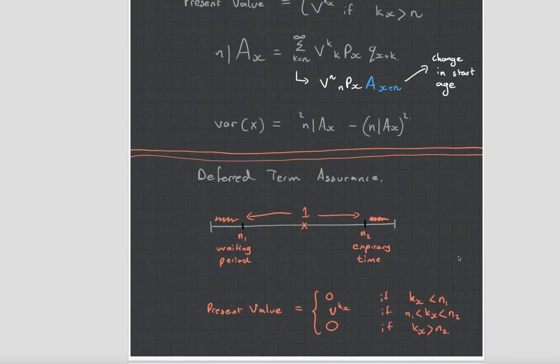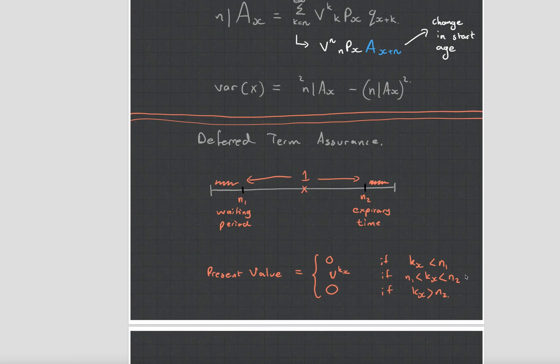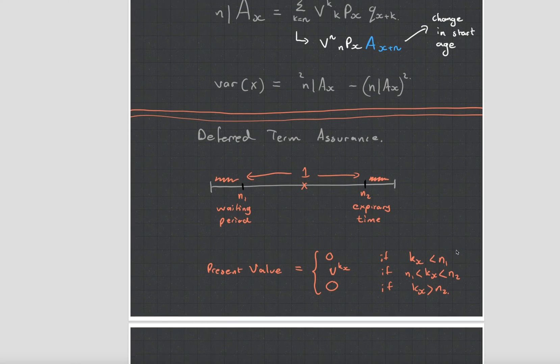But yeah so deferred contracts are pretty cool the variance follows the same formula. I then included this it's not in the notes but a deferred term assurance which you will probably I mean it's quite a fun one in the sense that you know now there's three possible options if you die before the waiting period you get nothing if you die within the waiting period in the expiry term you get something but if you die after the expiry term you get nothing. That might be in the exam so take a look at it although I'm sure they'll make it a little bit more complicated.